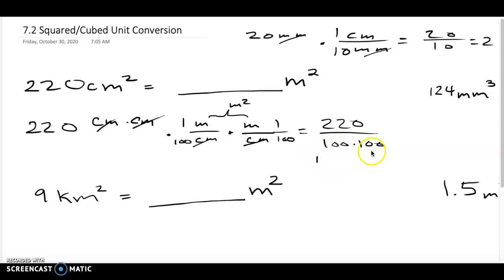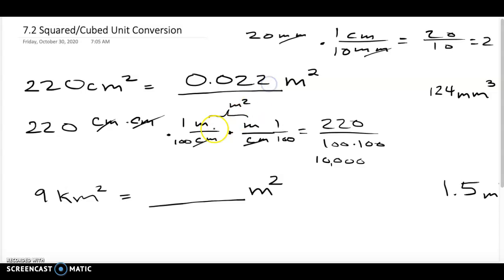That denominator is 10,000 — one followed by four zeros. So 220 divided by 10,000 gives a decimal number. This makes sense because when going from centimeters to meters, centimeters are way smaller, so 220 centimeters is a small amount in meters. The answer is 0.0022 meters squared.